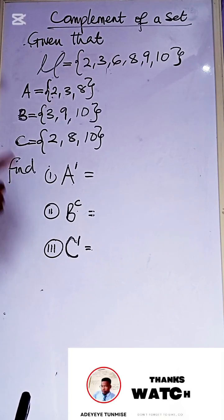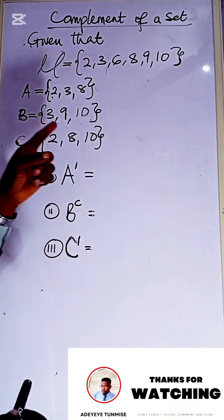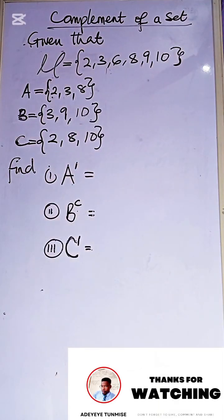Now we have given that the universal set to be 2, 3, 6, 8, 9, and 10.